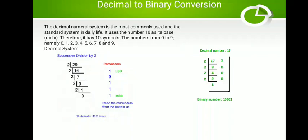One example is shown in the slide — we are finding the binary equivalent of the decimal number 29. First we divide 29 by 2, we get the remainder as 1. Then we divide 14 by 2, remainder is 0. Then we divide 7 by 2, remainder is 1. Then we divide 3 by 2, remainder is 1. Then we divide 1 by 2, remainder is 1.